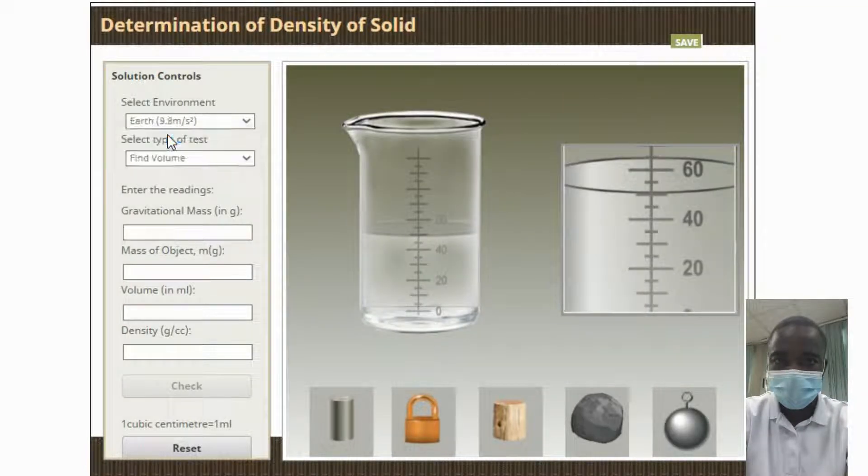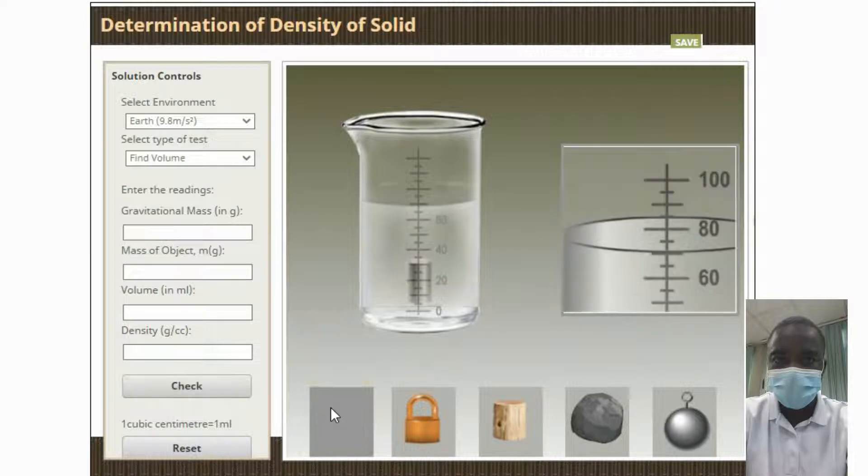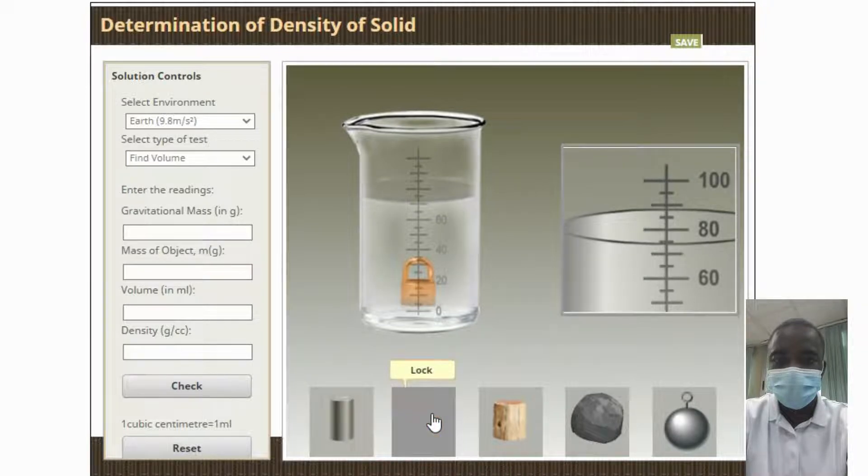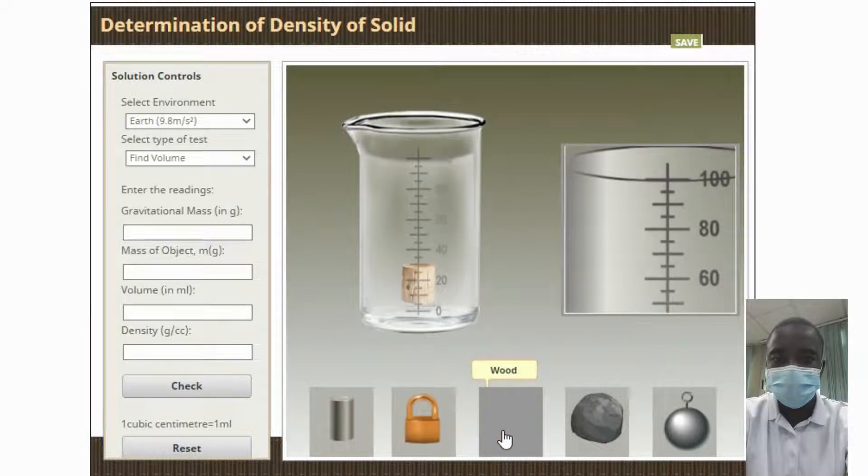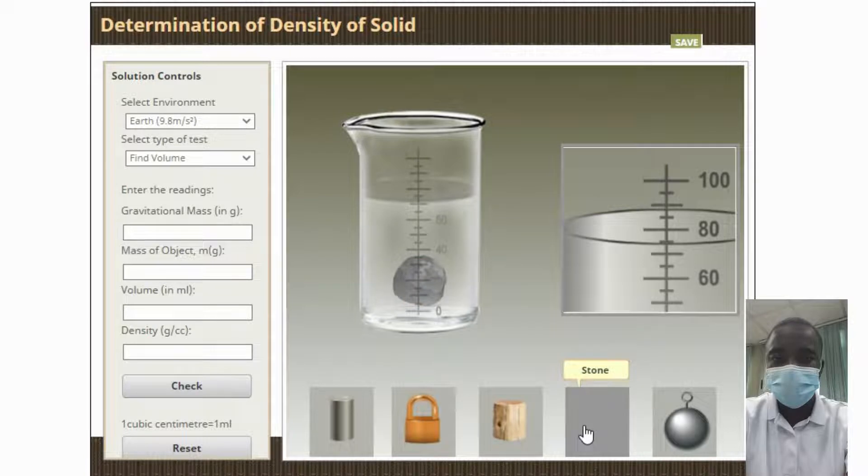The density of a solid can be determined using a variety of methods, depending on the size, shape, and composition of the solid. The most common method is to weigh the solid and divide by its volume. This can be done by measuring the dimensions of the solid and calculating its volume, or by submerging the solid in a known volume of liquid and measuring the displaced volume.